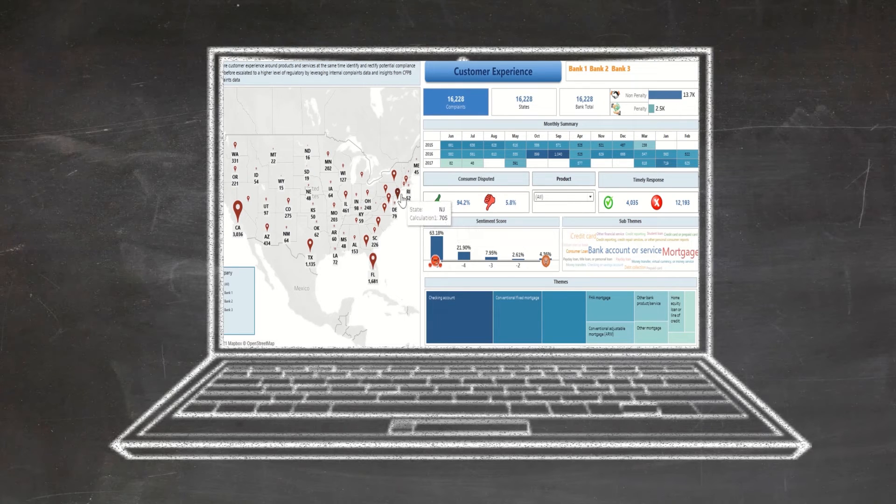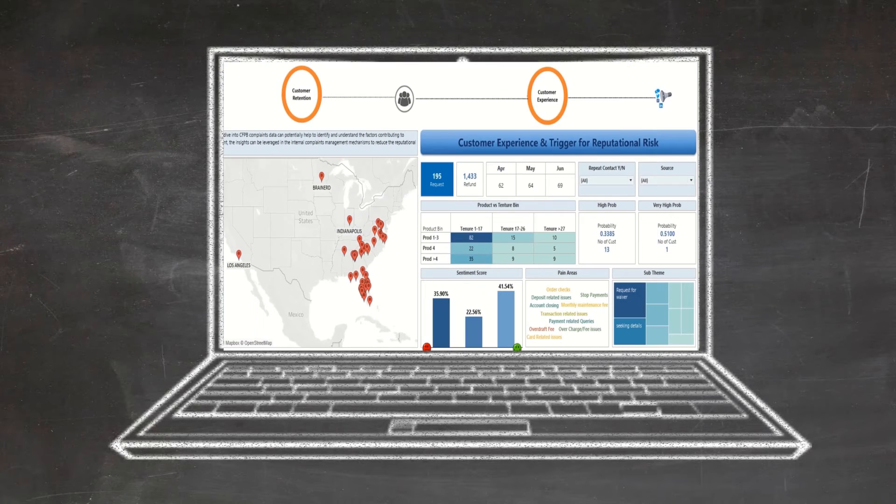Sentiment scores are then generated, driven by hot keywords extracted from complaints data. This is incorporated into analyzing the internal complaints of Bank One to calculate probability scores and identify pain areas for Bank One.